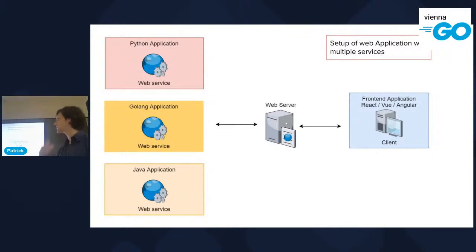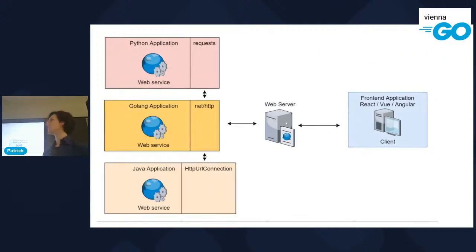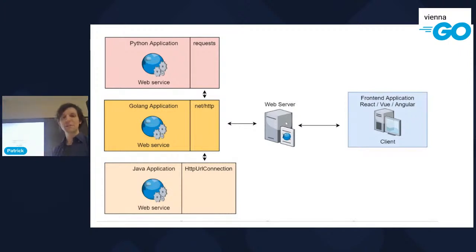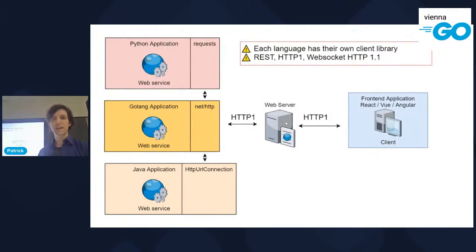Consider a web application in Python, Go, or Java with a frontend and microservices that also communicate with each other. Each language has its own HTTP client library — Python has 'requests', Go has 'net/http', Java has its own classes. Each looks different and requires you to control the HTTP connection yourself. With REST, you use HTTP/1 and all these different libraries to send data across the network.